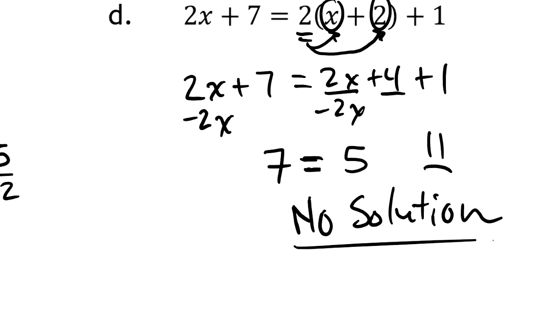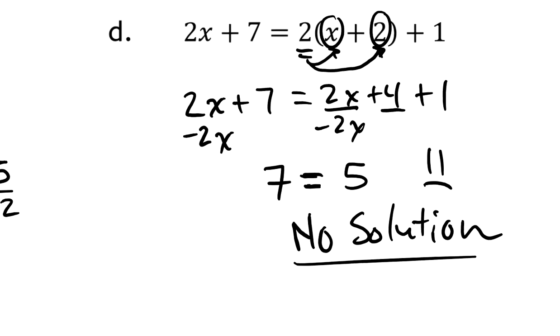The other thing that could happen is that we could get something that's always true. We could get something like, for example, 7 equals 7. And if we encounter that situation, what we report back is that the solution is all real numbers. So any real number would be a solution. But for problem D, there are no solutions. There is no real number that will make this true. Because regardless of what you select for X, you can't turn 7 into the number 5.